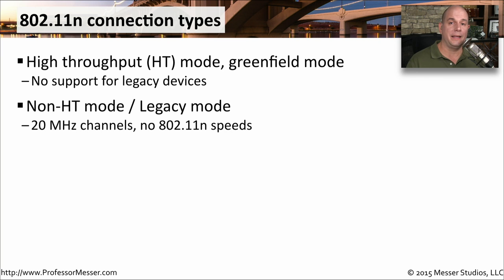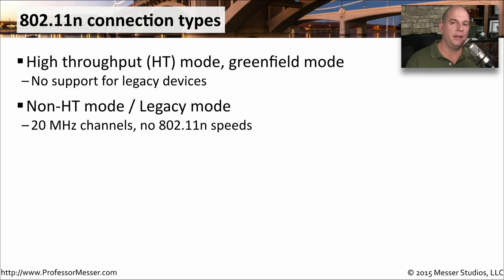If you do have legacy devices, you might want to consider running your 802.11n access point in legacy mode. This is a non-high throughput mode — it uses those 20 MHz channels, so you're not getting the larger 40 MHz channels and you're not going to get the 802.11n speeds. But if you have older equipment that can't run at those higher speeds, this may be a good way to configure your access point, at least until you get everyone upgraded.